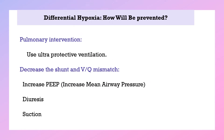How can we prevent differential hypoxemia? First, pulmonary intervention: use ultraprotective ventilation to help the lung recover. Second, decrease the shunt or VQ mismatch by increasing PEEP or positive inspiratory pressure, which increases mean airway pressure. Also use diuresis to achieve negative fluid balance and suction secretions from the lung.